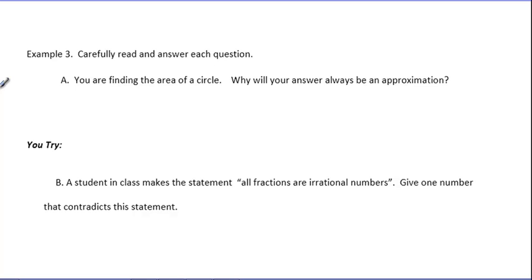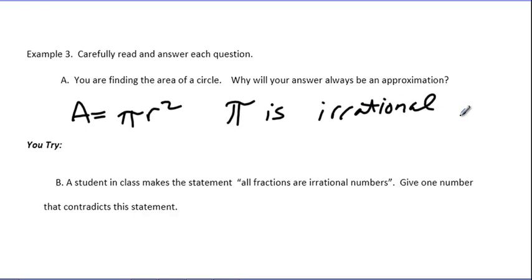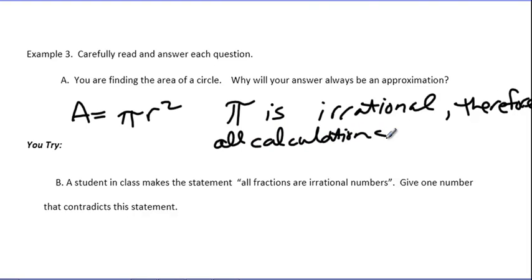You are finding the area of a circle. Why will your answer always be an approximation? The formula for area of a circle is A = π times the radius squared. If the radius is 2, for example, 2 squared is 4, and 4 times π — put that in your calculator and you get some long decimal answer. The reason why your answer will always be an approximation is because pi is irrational. Therefore, all calculations using pi will be approximate answers.